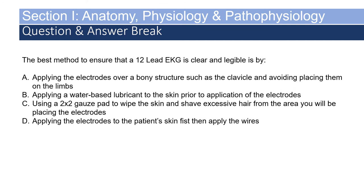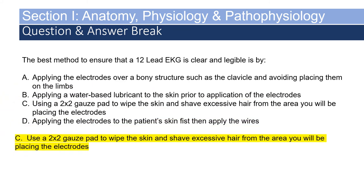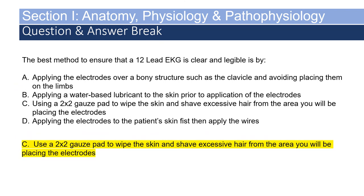The best method to ensure a 12-lead EKG is clear and legible is: A) applying electrodes over a bony structure such as the clavicle, B) applying water-based lubricant to the skin, C) using a 2x2 gauze pad to wipe the skin and shave excessive hair from the area where you will place electrodes, or D) applying electrodes to the patient's skin first, then applying the wires. The answer is C. A is incorrect — we don't want to apply electrodes over bony structures. B is incorrect — never apply water-based lubricant to the skin. D is incorrect because applying electrodes first then wires hurts the patient.